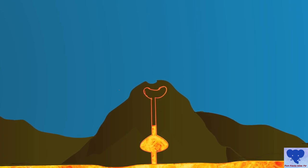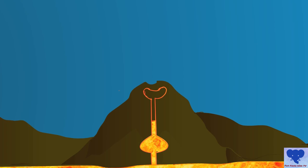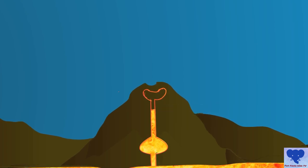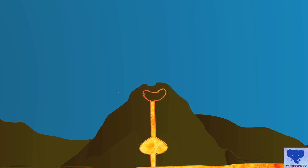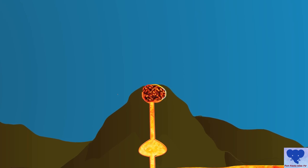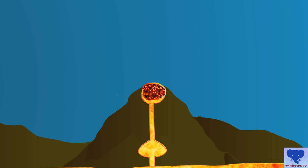Often magma solidifies in the vent, creating a plug and blocking the volcano like a cork in a bottle. The rising magma pushes the plug out of the volcano.